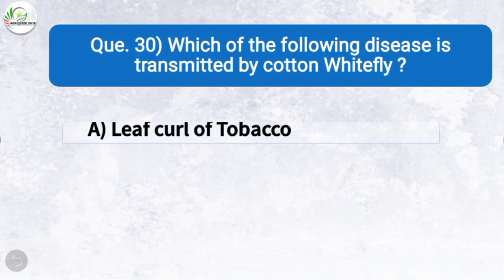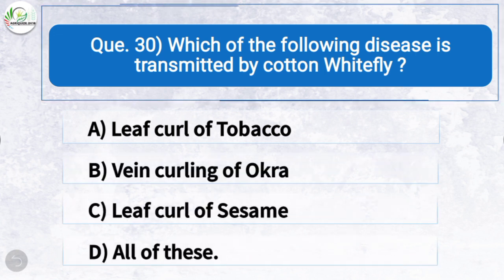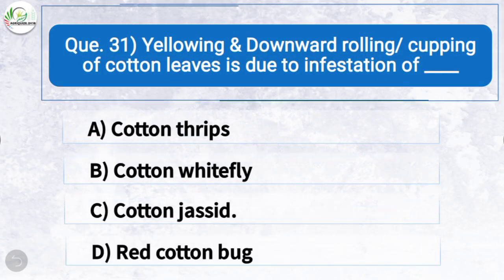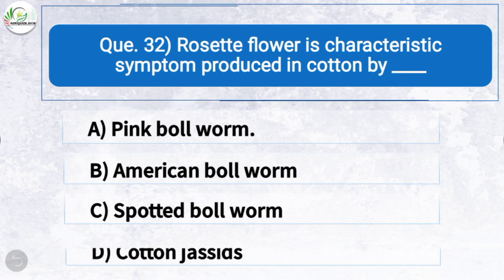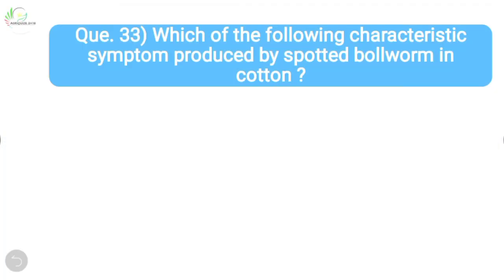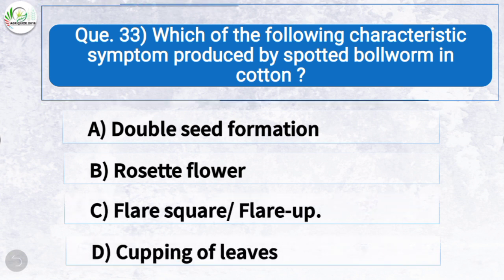Question thirty: Which disease is transmitted by cotton whitefly? The correct answer is option D: all of these — leaf curl of tobacco, vein curling of okra, and leaf curl of sesame. Question thirty-one: Yellowing and downward rolling or cupping of cotton leaves is due to infestation of — the correct answer is option C: cotton jassid. Question thirty-two: Rosette flower is a characteristic symptom produced in cotton by — the correct answer is option A: pink ball worm.